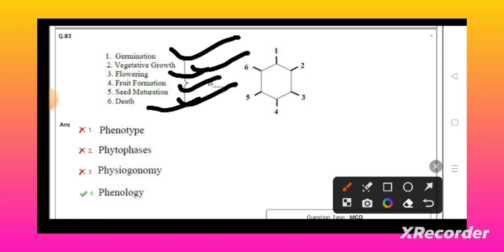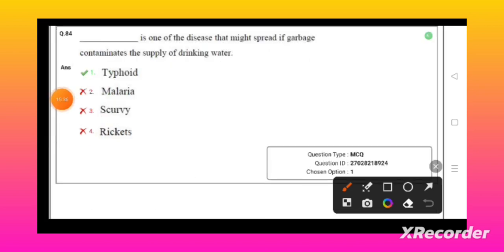Which is one of the diseases that might spread if the garbage or contaminant supplies the drinking water? Example: typhoid. Typhoid is spread by contaminated water and food.